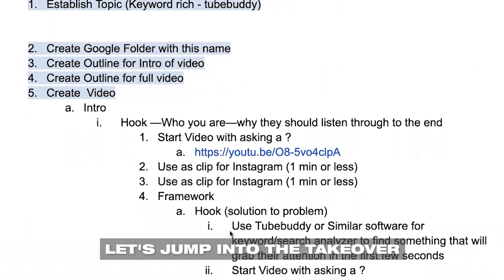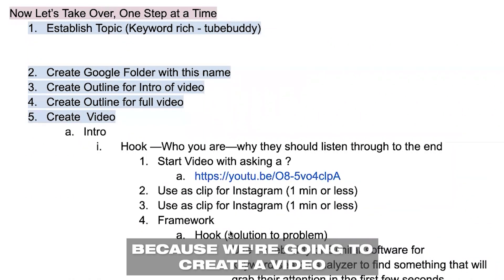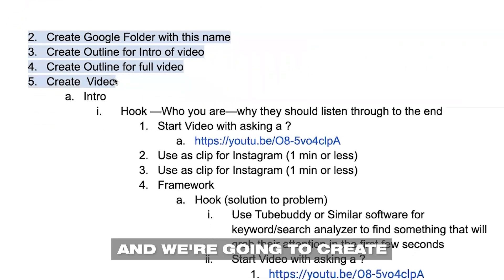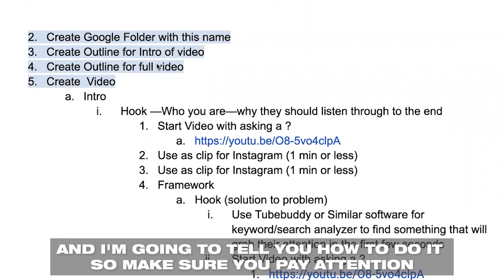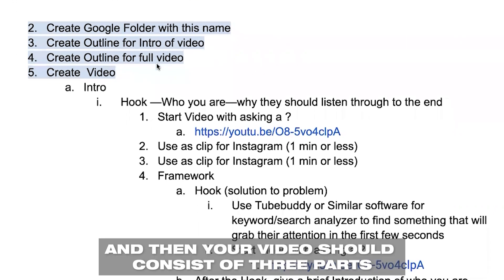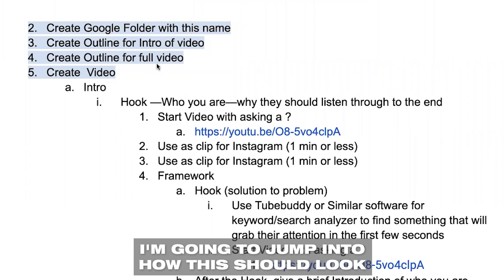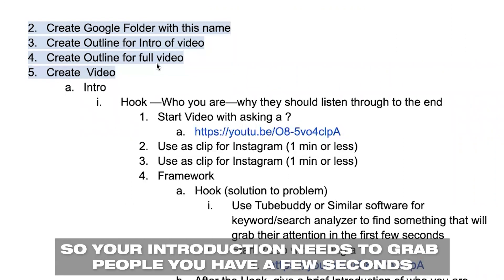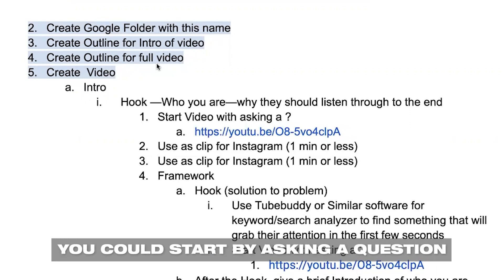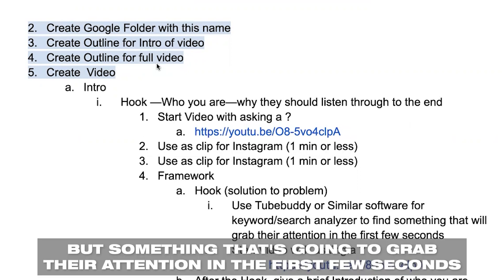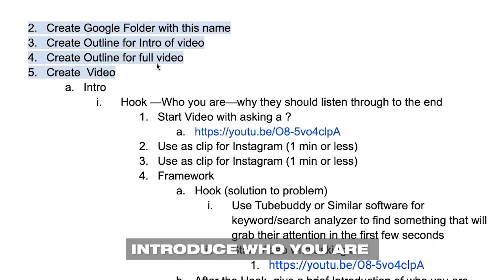Now let's jump into the takeover. We're gonna start by establishing a topic around this deposit of value, and we're gonna create an outline because we're gonna create a video around this topic. We're going to create an introduction for that video — a short introduction that's gonna be used later. Your video should consist of three parts: your introduction, your body, and your outro. Your introduction needs to grab people. You have a few seconds to get people to want to listen. Start with a hook — something that's gonna grab their attention — and then introduce who you are.